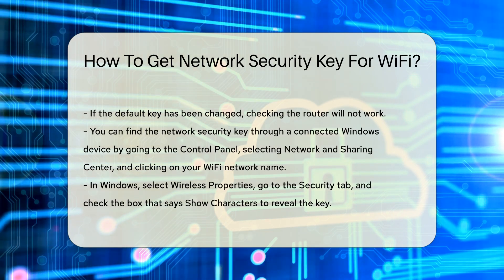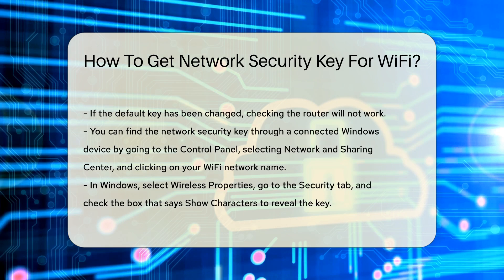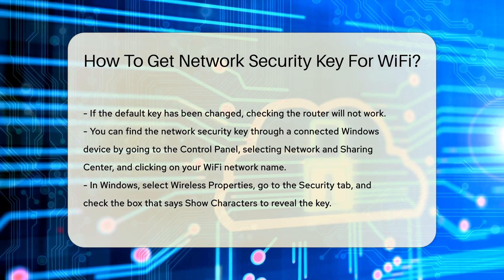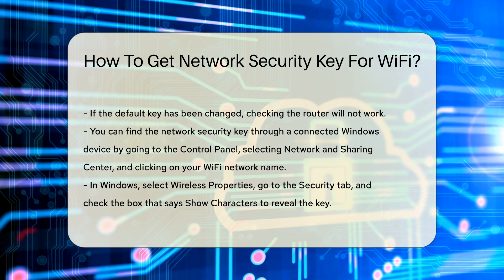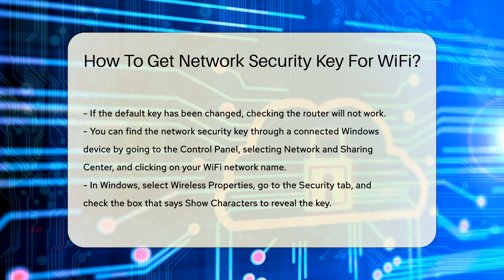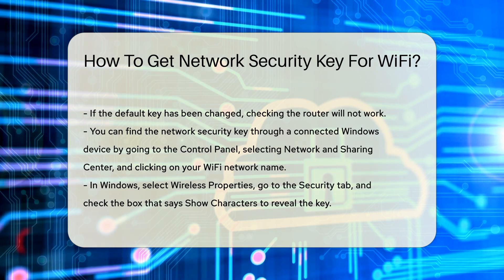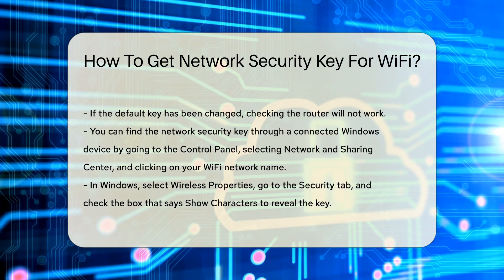Another way to find the network security key is through a connected device. On a Windows computer, go to the Control Panel, select Network and Sharing Center, and click on the name of your Wi-Fi network. Select Wireless Properties and then the Security tab. Here, you can see the network security key, but it will be hidden. Check the box that says Show Characters to reveal it.